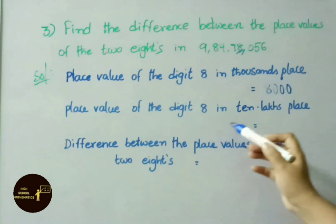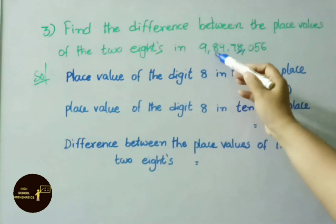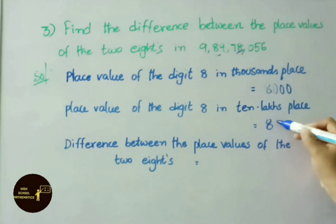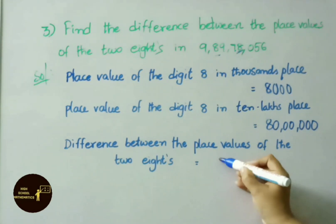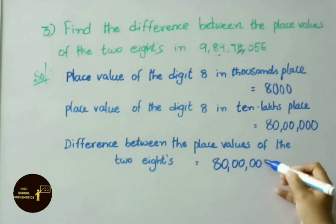Next one. Place value of the digit 8 in ten lakhs place. That is 80,00,000. What they ask in the question is we need to find the difference between the place values of the two eights.